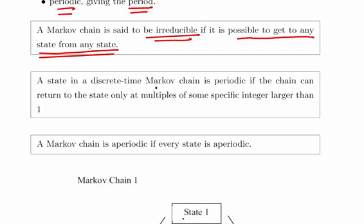A state in a discrete-time Markov chain is periodic if the chain can return to that state only at multiples of some specific integer larger than one. This is very important: one specific integer.